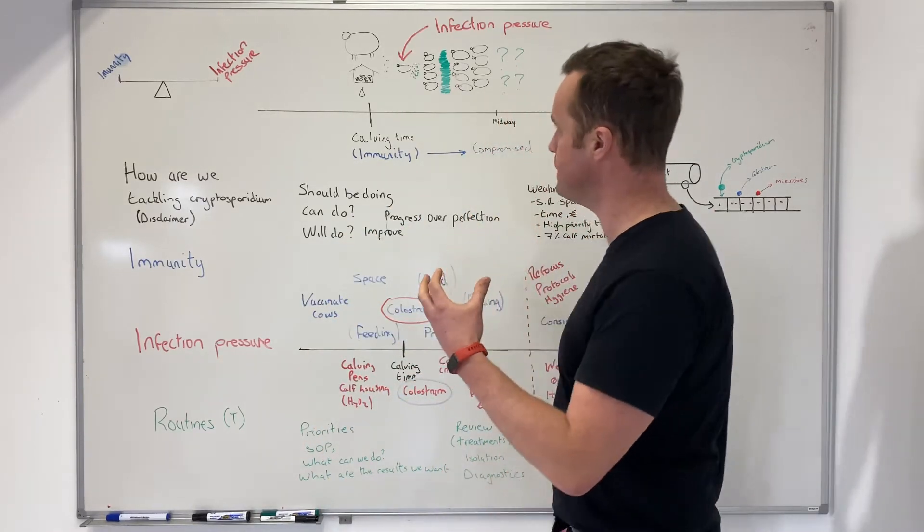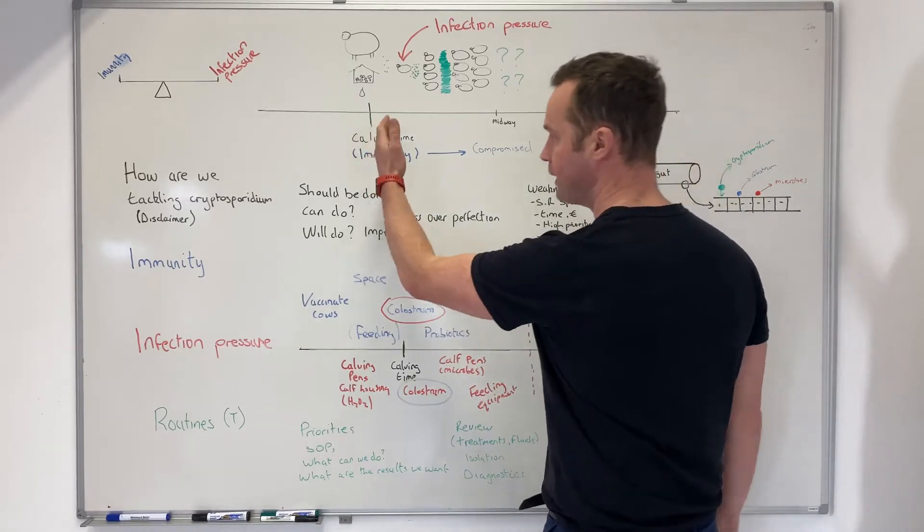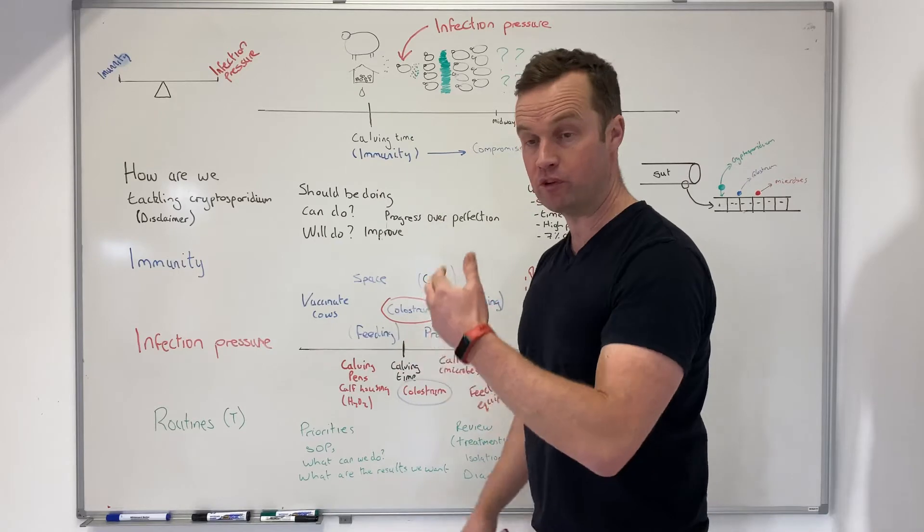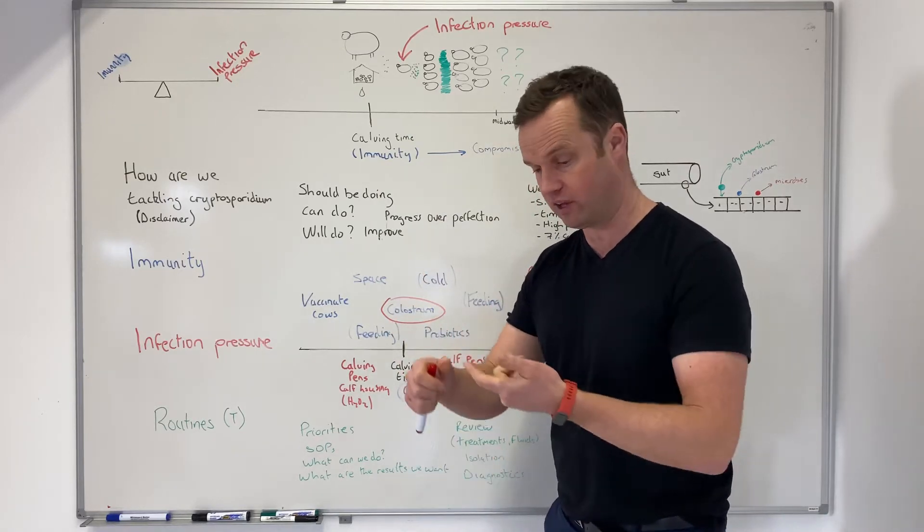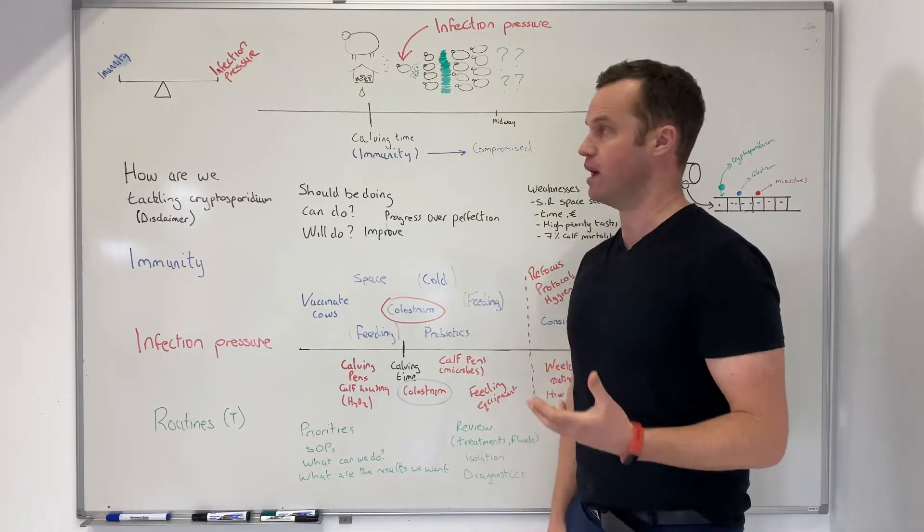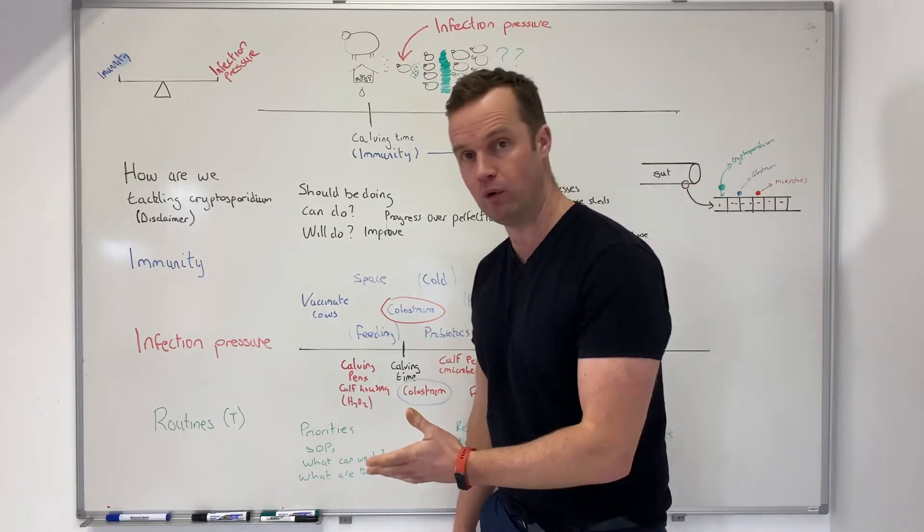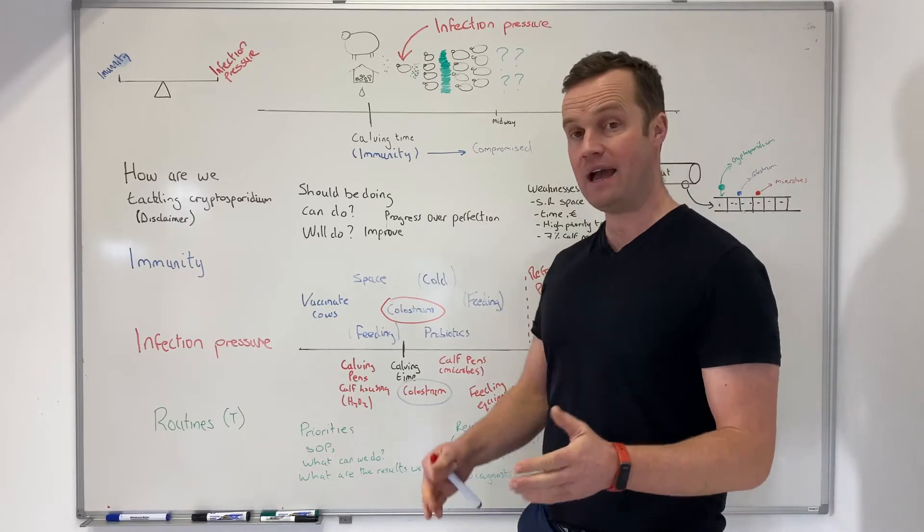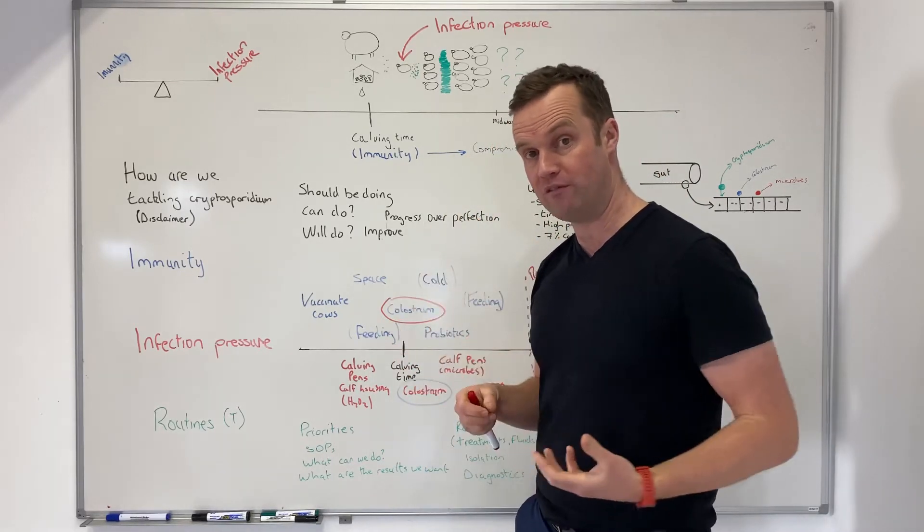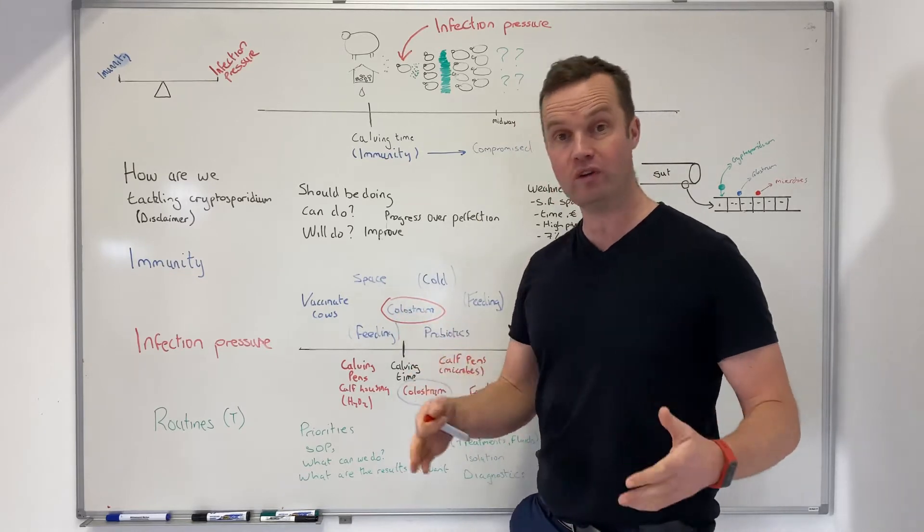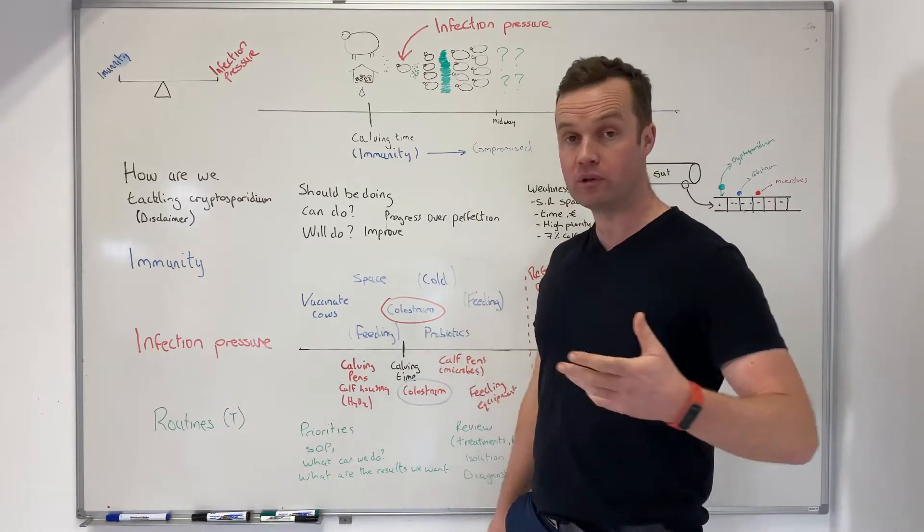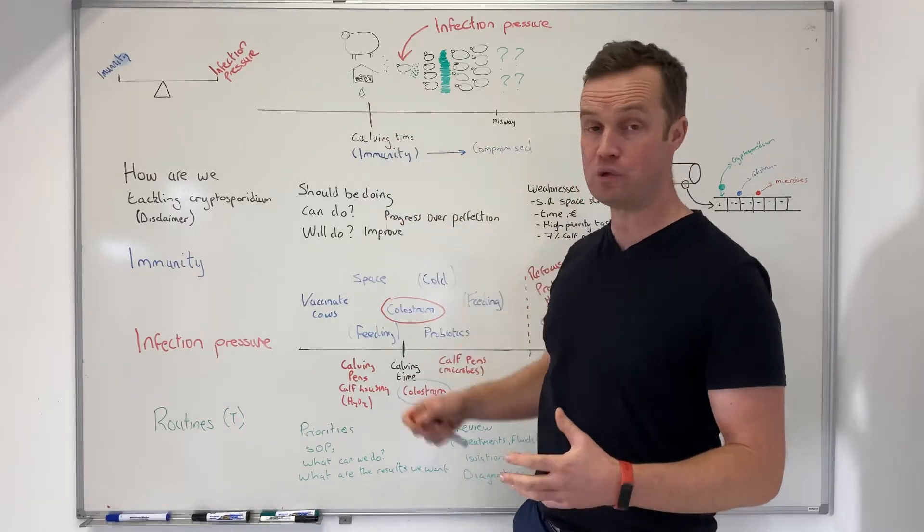With calf scour, if we look at infection pressure, we come up to calving time. With many of the viruses that cause scour, bacteria, or cryptosporidium, we have a source for them usually to start out with. Most commonly the cows are the source of cryptosporidium. Because of the type of bug that it is, it survives for up to 12 months in the environment, so the housing and existing calf sheds or calving pens can be a source of it. Some people will talk about water as well, but the cows and the houses are the main source.